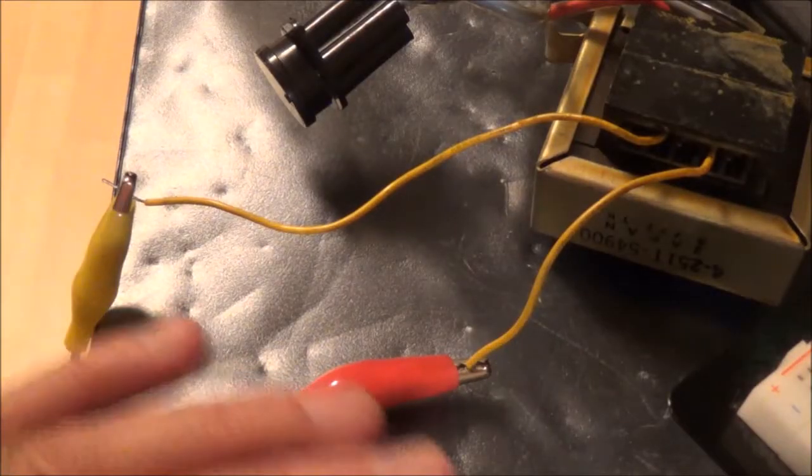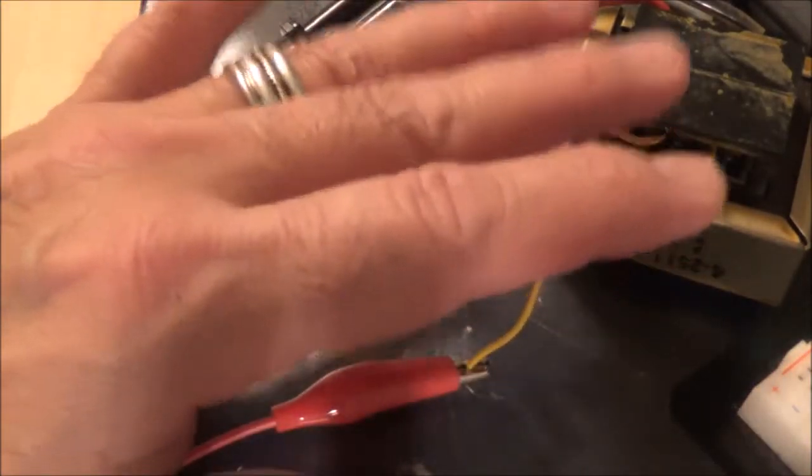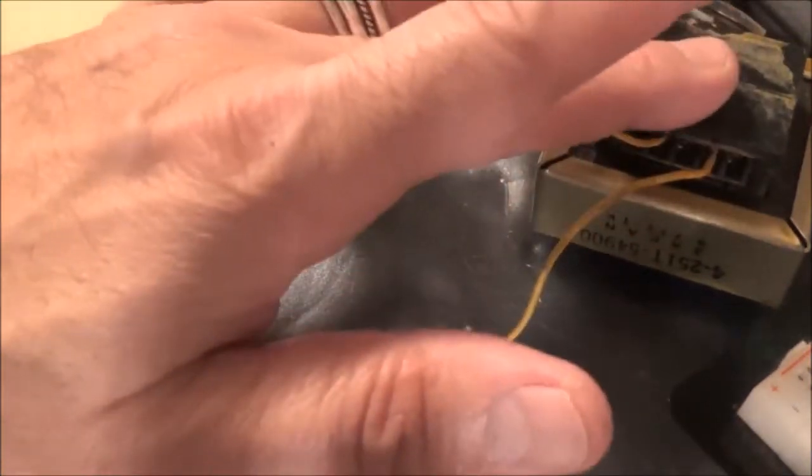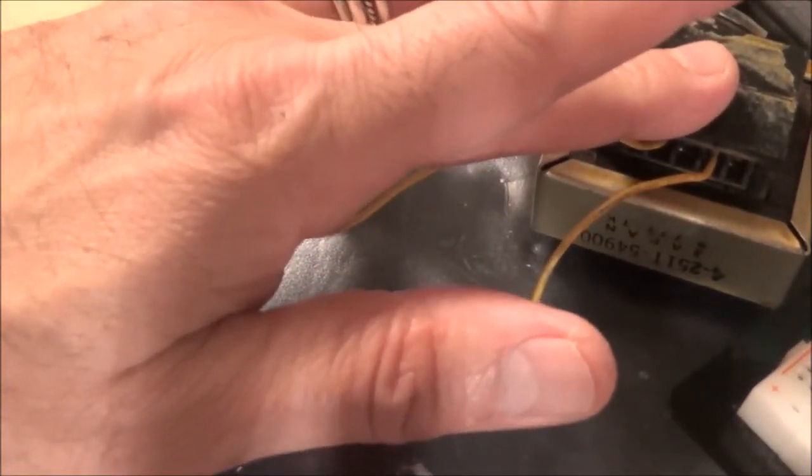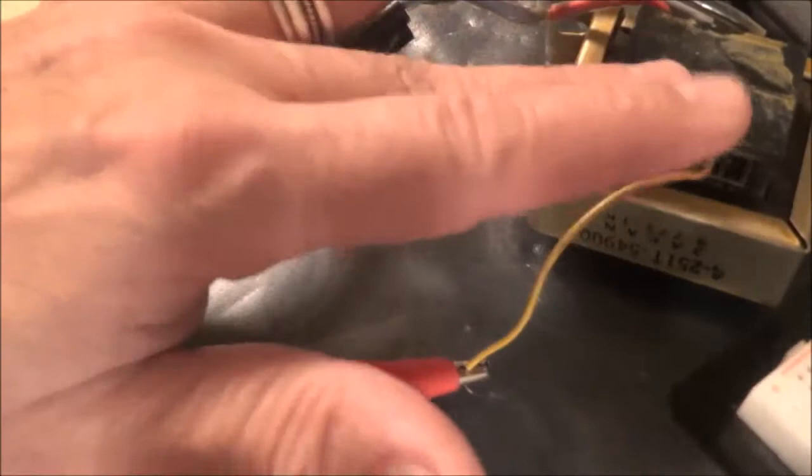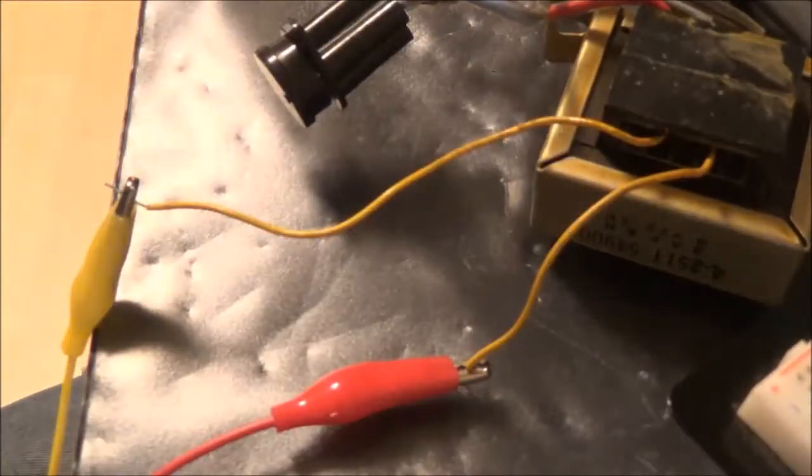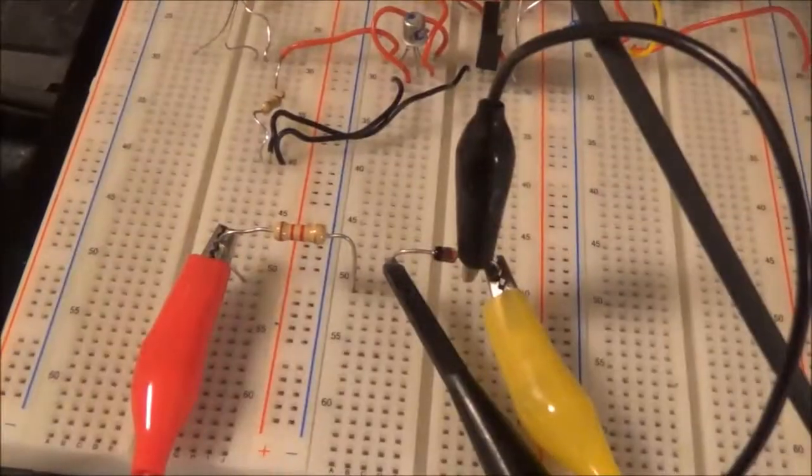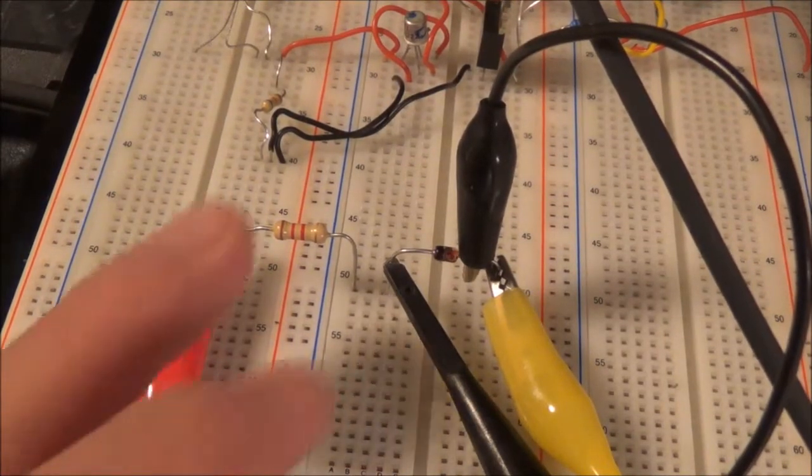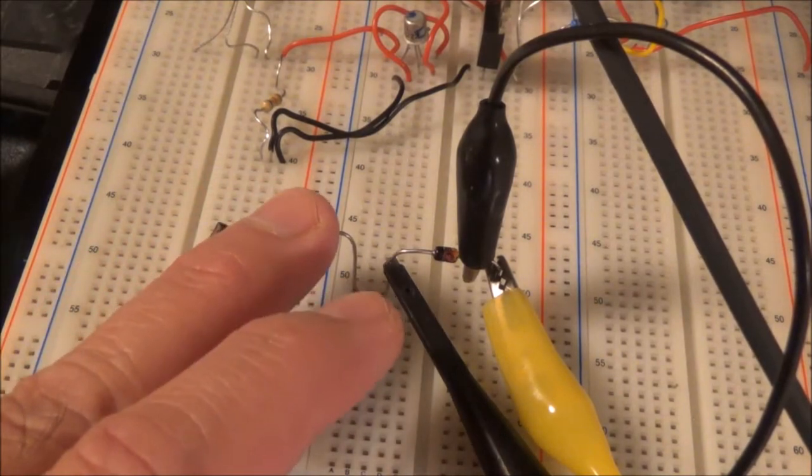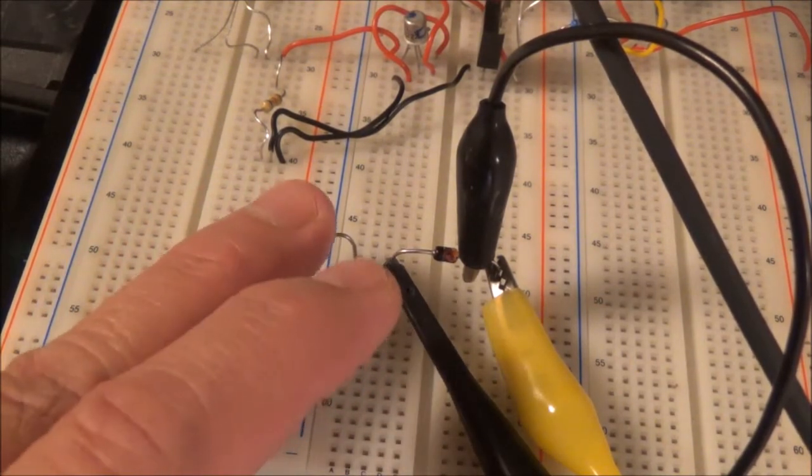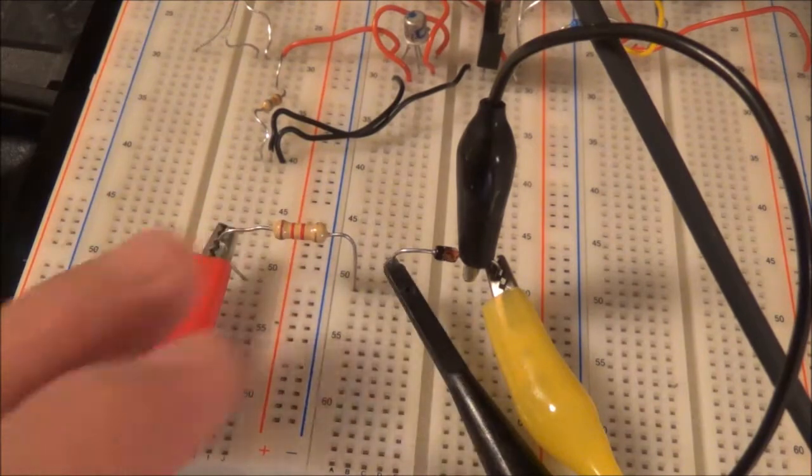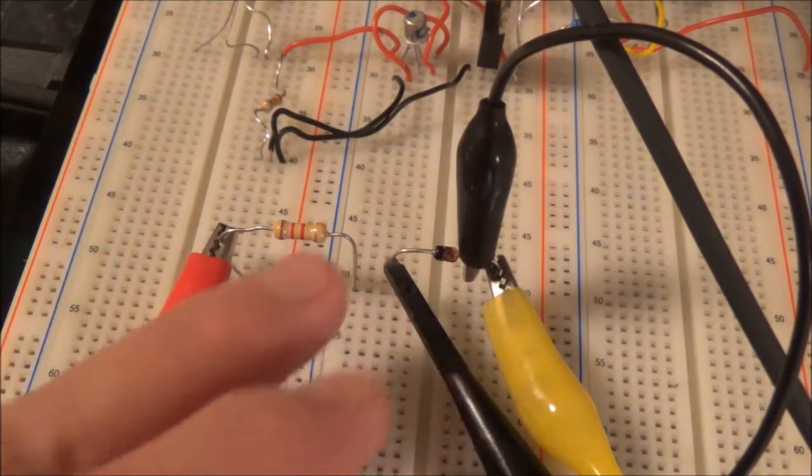Now here is my setup. I'm using two alligator clips running from the power transformer here. The power transformer is plugged into an isolation transformer, and on the breadboard I'm using a 1.2K or 1200 ohm current limiting resistor, which limits the current so we don't burn this thing up.